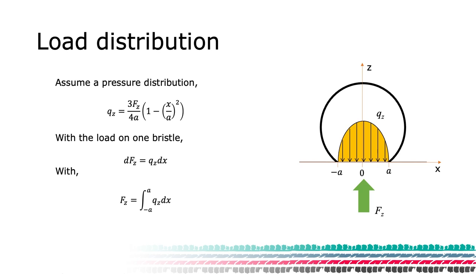We make sure that the distribution sums up to the total load on the tire over the entire contact, and that for one bristle, the FZ equals the load distribution times the length dx. From measurements, we know that the real shape is similar to a parabolic function.